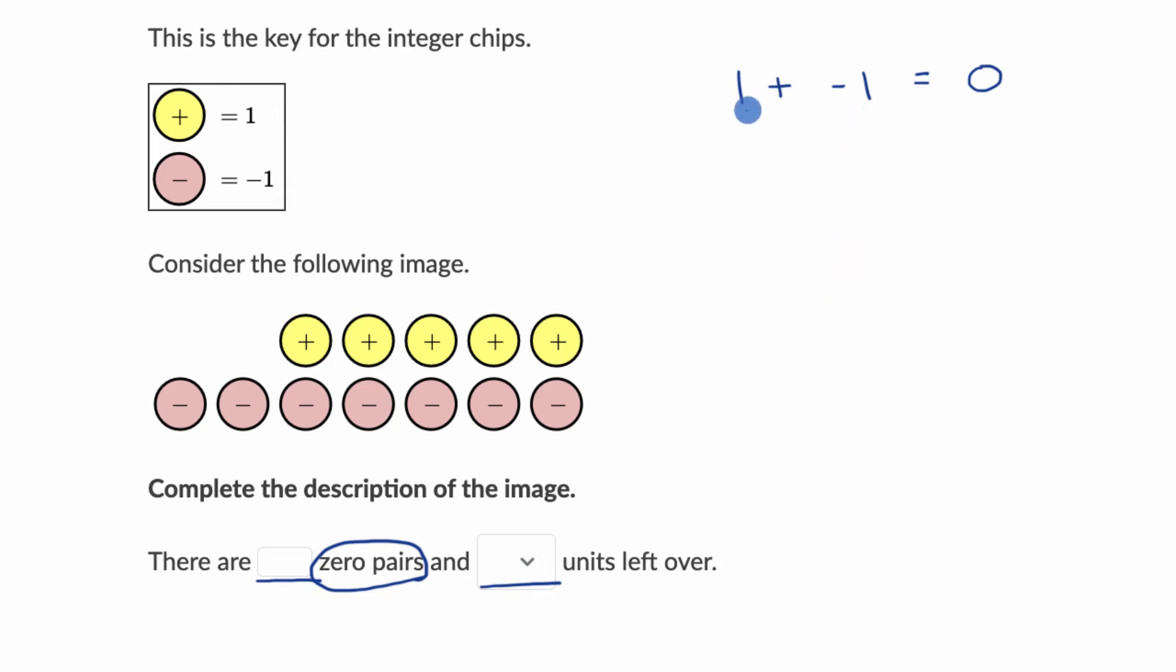Why does that make sense? Well, imagine if positive values were walking forward and negative values were walking backwards. So you could view this as one step forward plus one step backward. That's just going to get you back to where you were before.